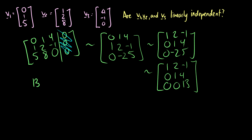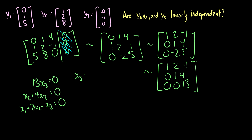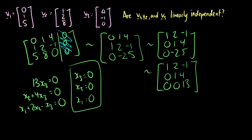We can see that 13*x3 = 0, so x3 = 0; then x2 + 4*x3 = 0 gives x2 = 0; and x1 + 2*x2 - x3 = 0 gives x1 = 0. The only solution is the trivial solution, therefore the set is linearly independent.